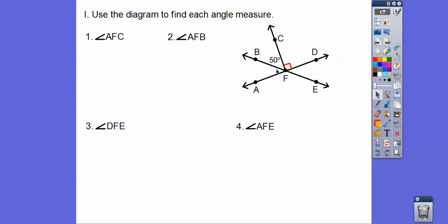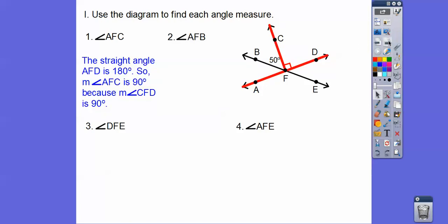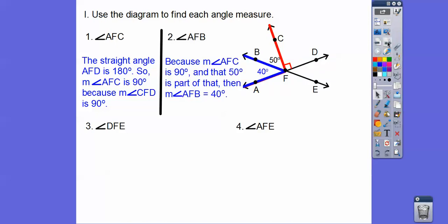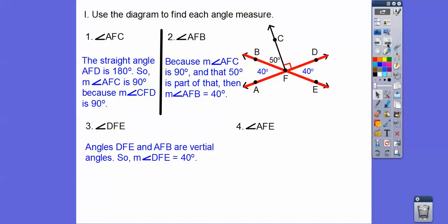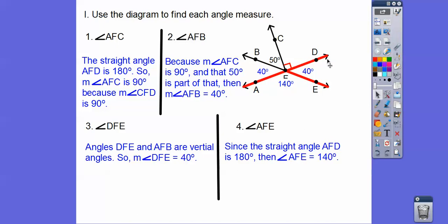Here's a straight line — if one side is 90°, then this side is also 90°. So angle AFC is 90 degrees. Since the red angle is 90° and one part is 50°, by the angle addition postulate the other part must be 40° because 40 plus 50 equals 90. Angle DFE forms a vertical angle with that 40°, so it also equals 40°. For angle AFE, using the straight line: if that's 40°, then AFE must be 140° to complete the 180° linear pair.